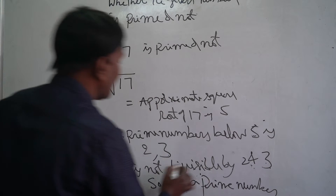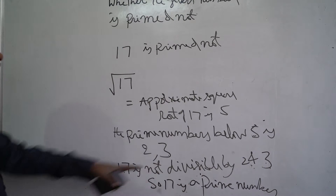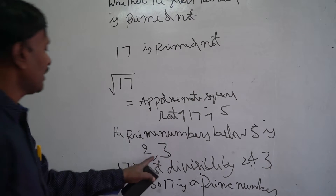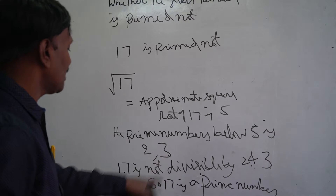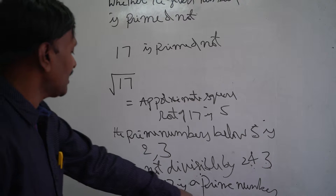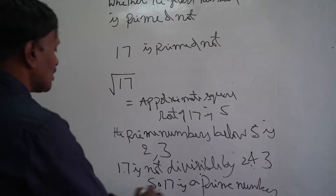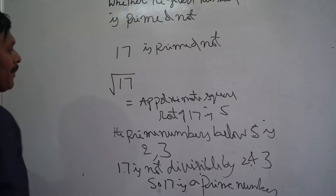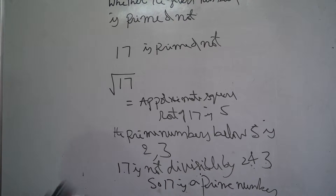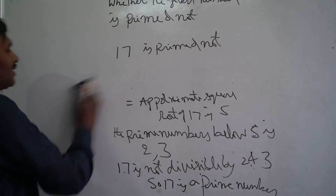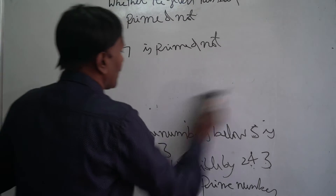So if it is not divisible by any of these numbers, we can say that it is a prime number. So 17 is a prime number. Next we will take one more example.